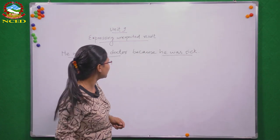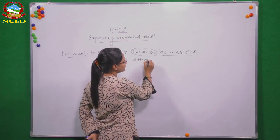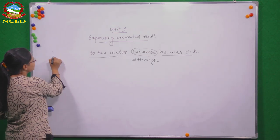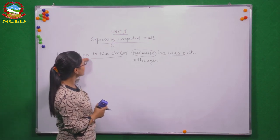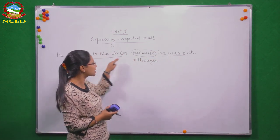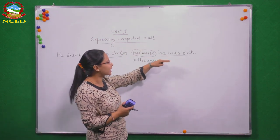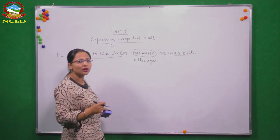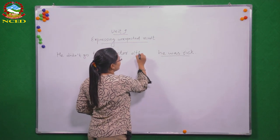Now if we write 'although' instead of 'because' and change this a little bit — 'he didn't go to the doctor although he was sick' — is that an expected result? No. When somebody is sick, the expected result is he goes to the doctor, but he did not. So this sentence shows an unexpected result.